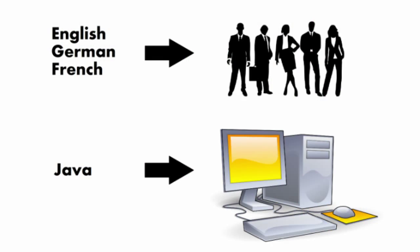Hey SuperCoders! Today we're going to learn how to program using Java. Java is a language, sort of like English or German. The difference is that Java is a programming language, meaning that instead of using it to talk to other people, you use it to give a computer instructions. The idea of a programming language might sound a little bit intimidating, but in the end, it's not so different than the languages we speak.